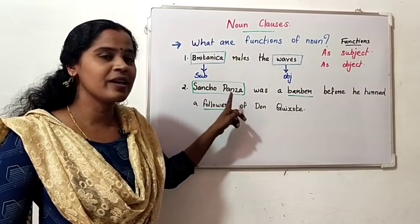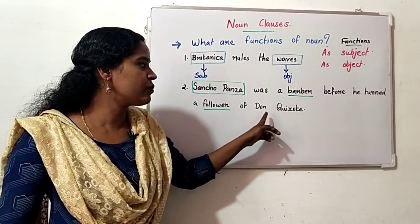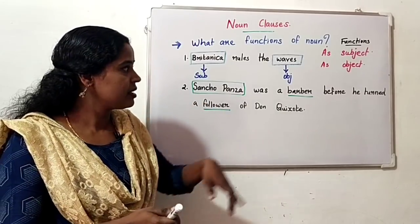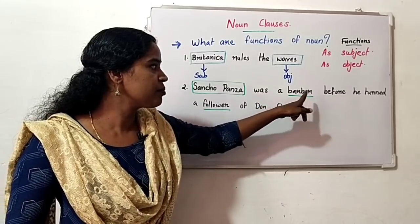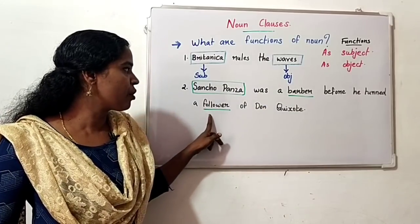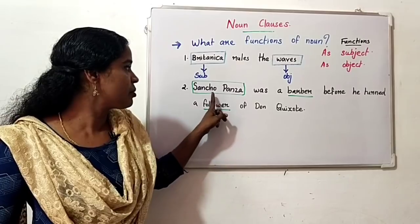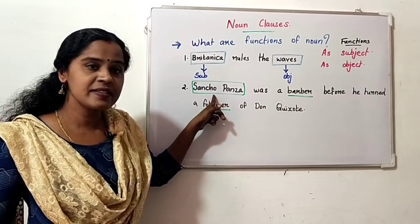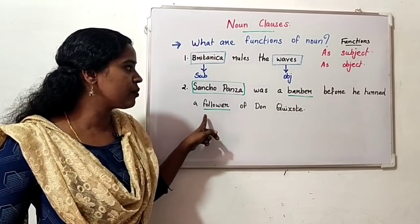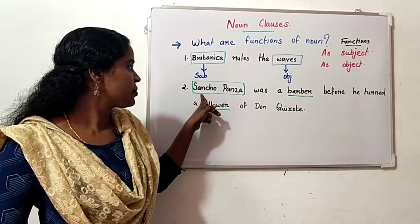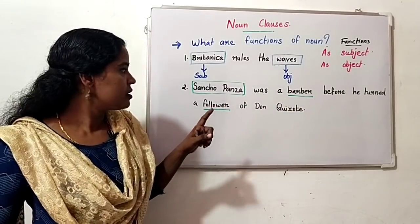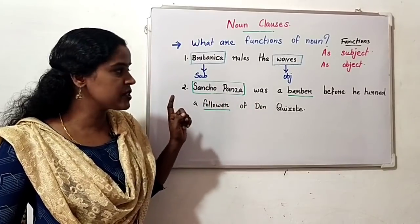See the next example: 'Sancho Panza was a barber before he turned a follower of Don Quixote.' Here, Sancho Panza is the subject. A barber and a follower are subject complements — they add something more about Sancho Panza, describing who he is.